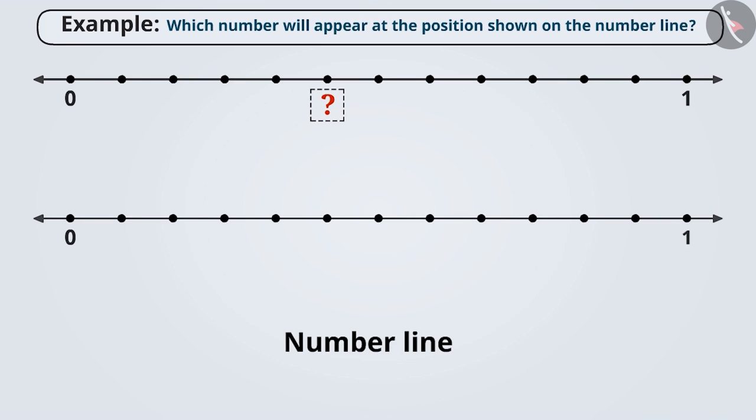As you can see here, distance from 0 to 1 is divided into 12 equal parts. The number at the position which we want to know is present between two whole numbers, 0 and 1, so this will be a fraction. Since this number represents 5 parts out of 12 equal parts, we can say that the fraction will be 5 by 12.